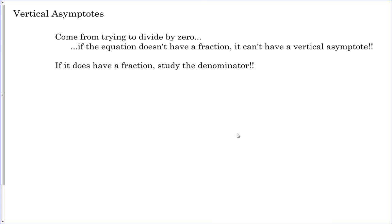Vertical asymptotes come from trying to divide by zero. Here's a hint: if your equation doesn't have a fraction, it can't have a vertical asymptote. No fraction means no vertical asymptotes. If you do have a fraction, we need to study the denominator.